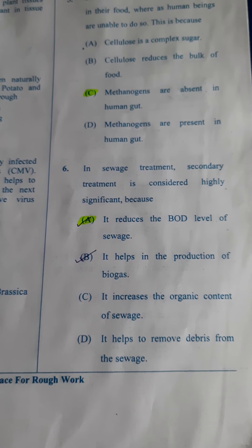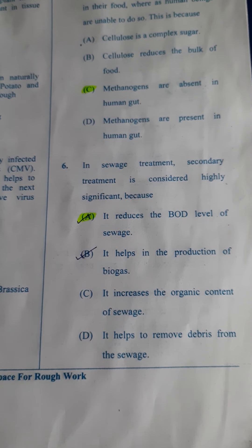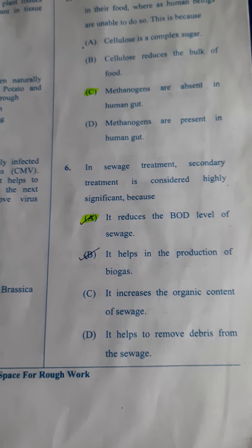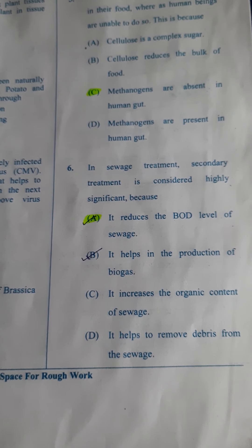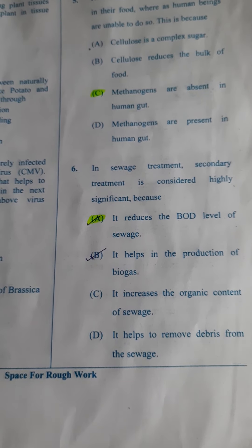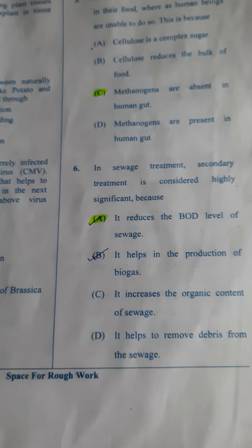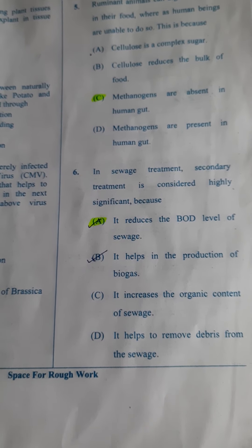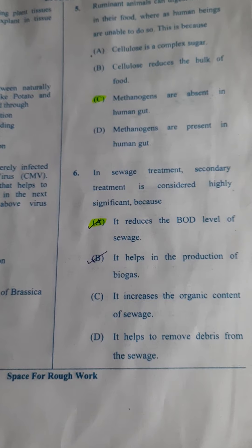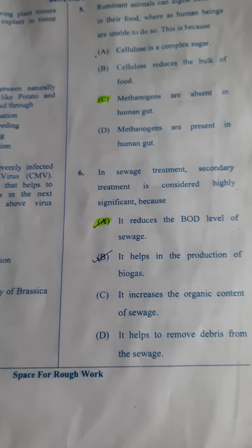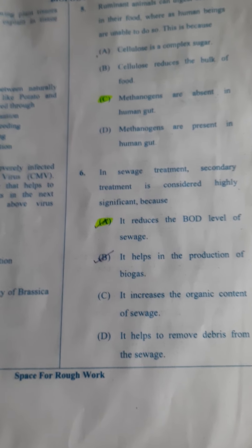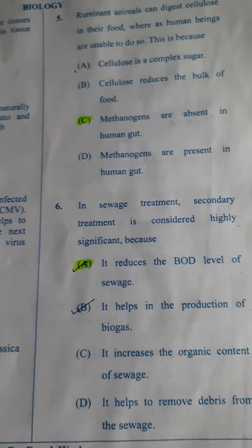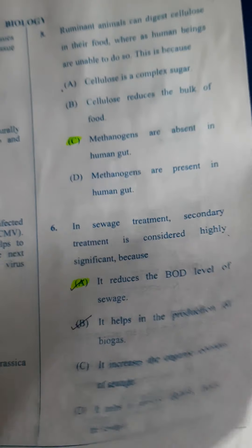Next one: In sewage treatment, secondary treatment is considered highly significant because — in secondary treatment, we use flocs, and these flocs reduce the BOD, that is biochemical oxygen demand. That is the significance of the second step. So here A is the answer — it reduces the BOD level of the sewage.